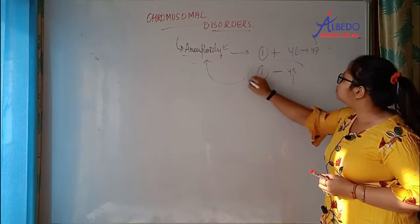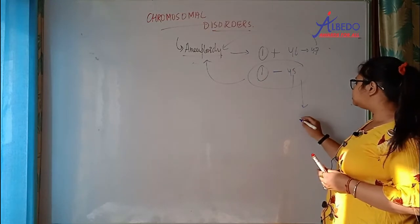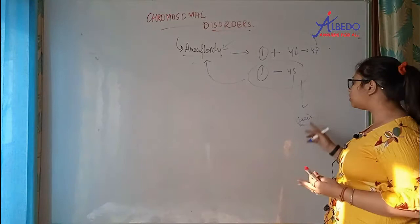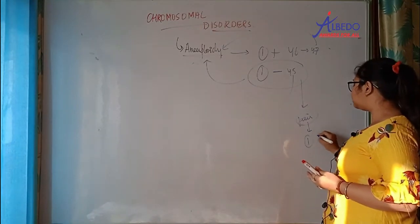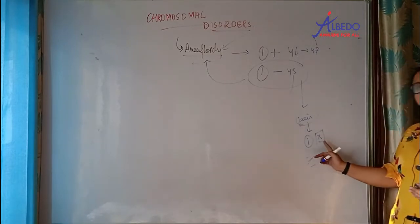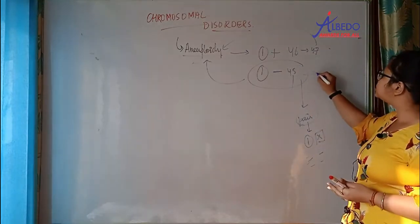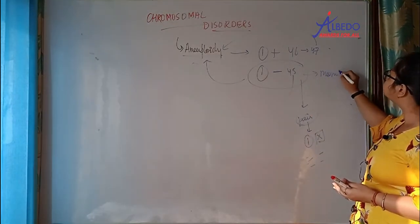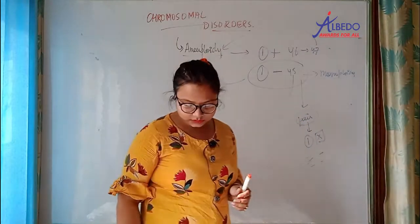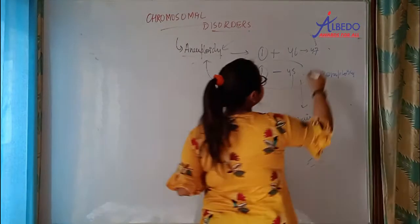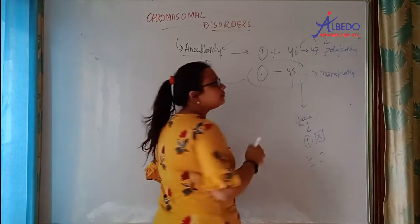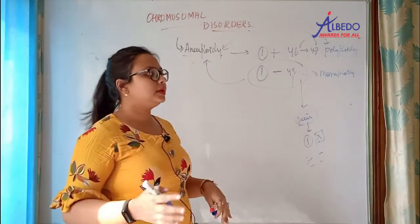When chromosomes are distributed, every pair should be present — one chromosome from each pair. If any pair has only one chromosome, we call this condition monosomy. After that, if a chromosome is increased, we call it trisomy or polyploidy — when your chromosome number is increased.